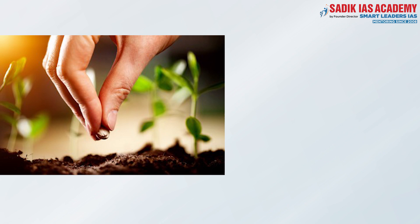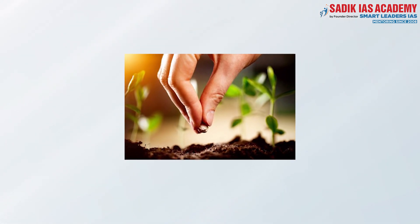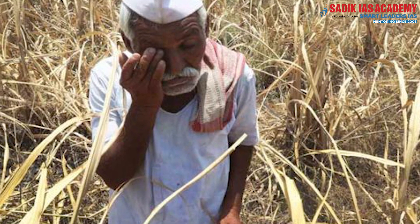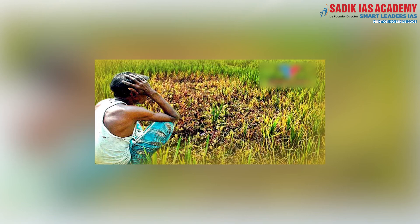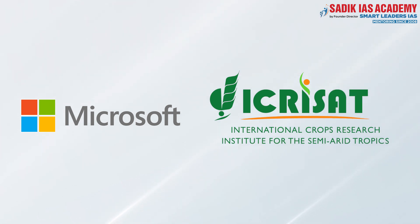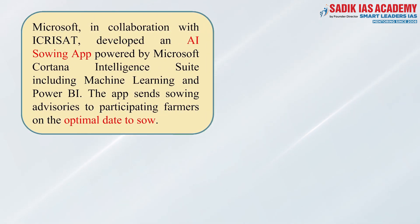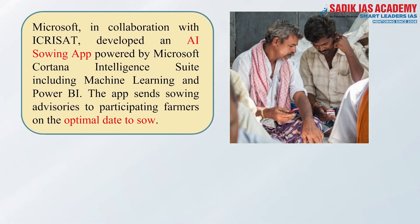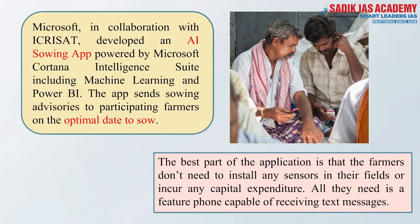Due to unpredictable climate, farmers face difficulty finding the right sowing time. Sowing date is very critical to ensure a good harvest, and if it fails, it results in loss as a lot of costs are incurred for seeds and fertilizer applications. To overcome this problem, Microsoft, in collaboration with the International Crop Research Institute for Semi-Arid Tropics, developed an AI sowing app powered by Microsoft Cortana Intelligence Suite, including machine learning. This app sends sowing advisories to participating farmers on the optimal day to sow.